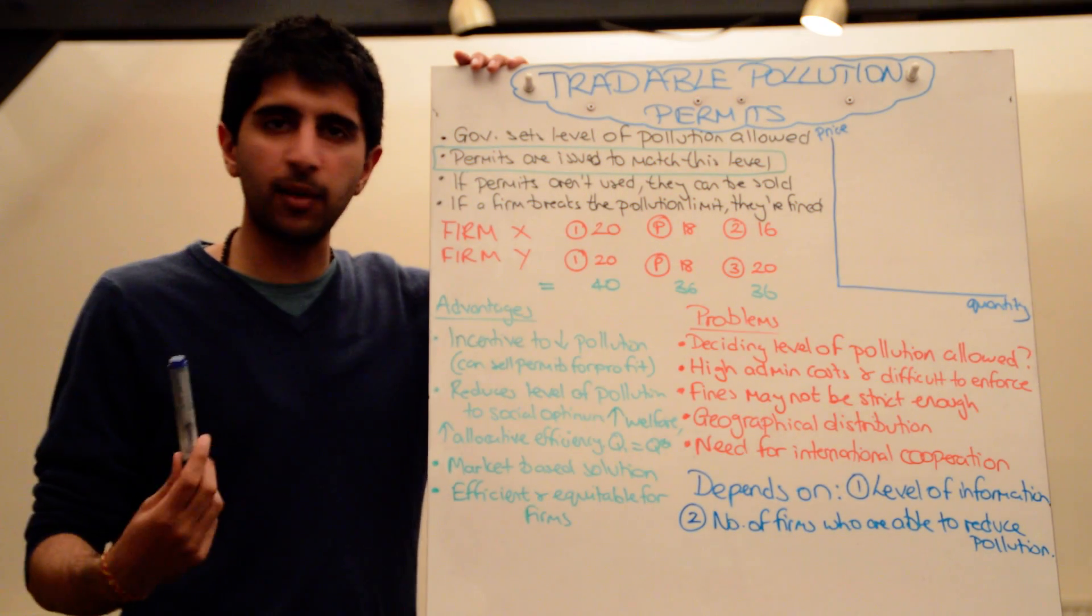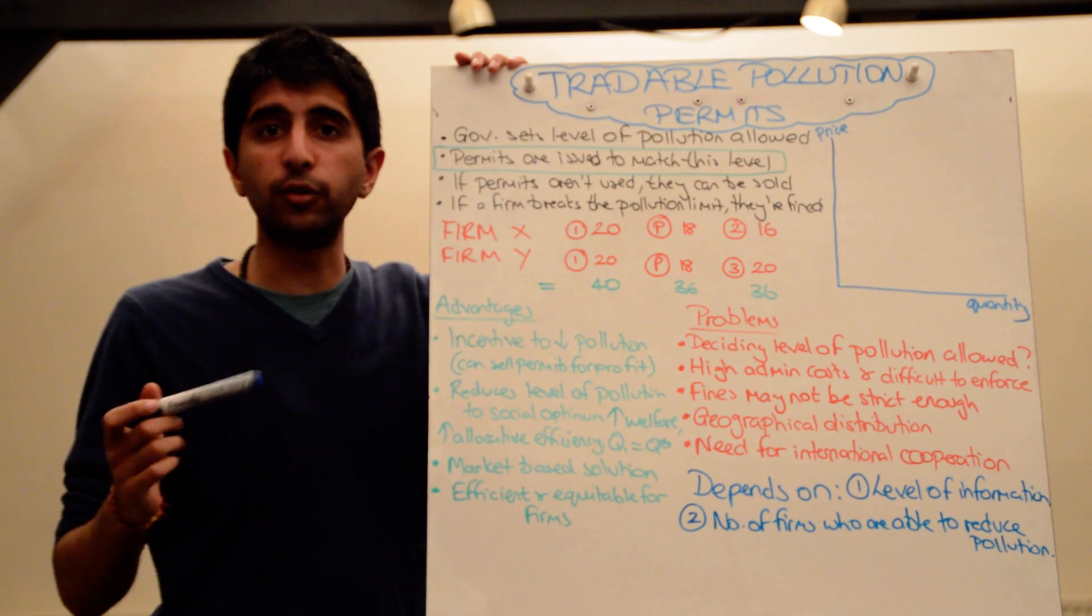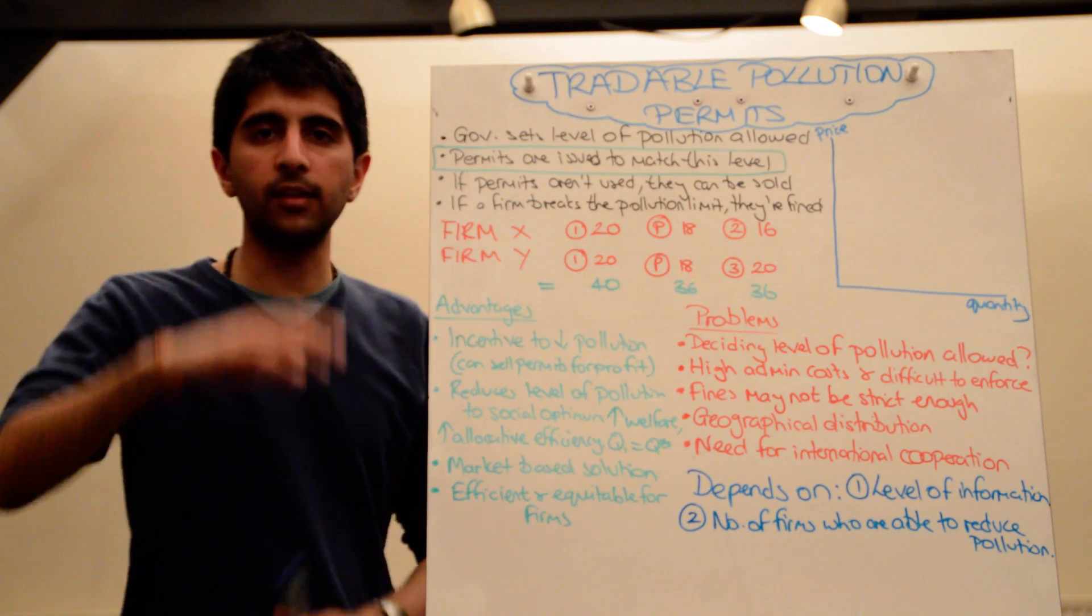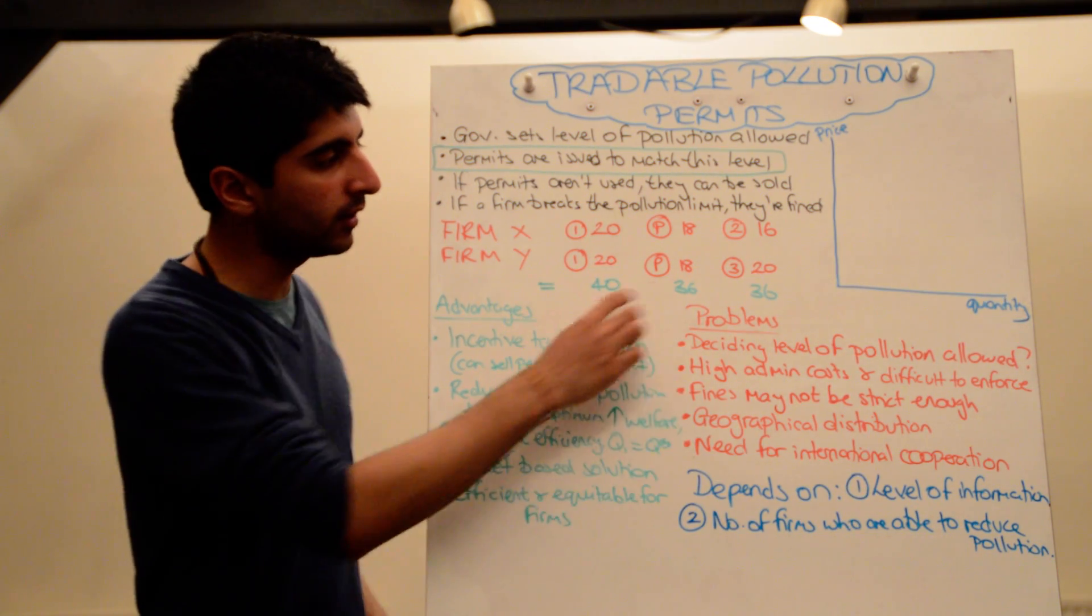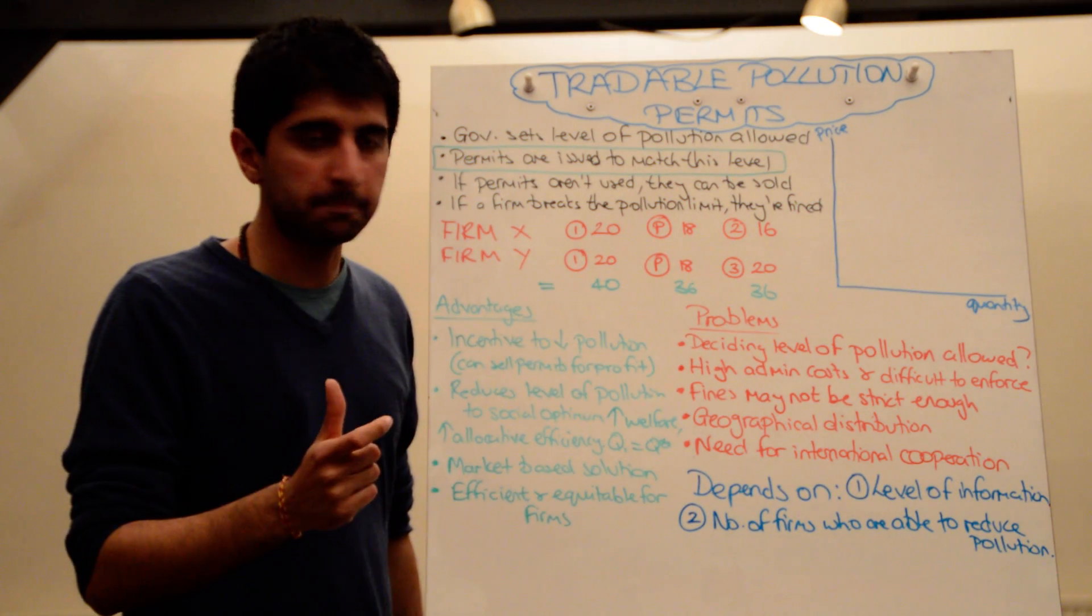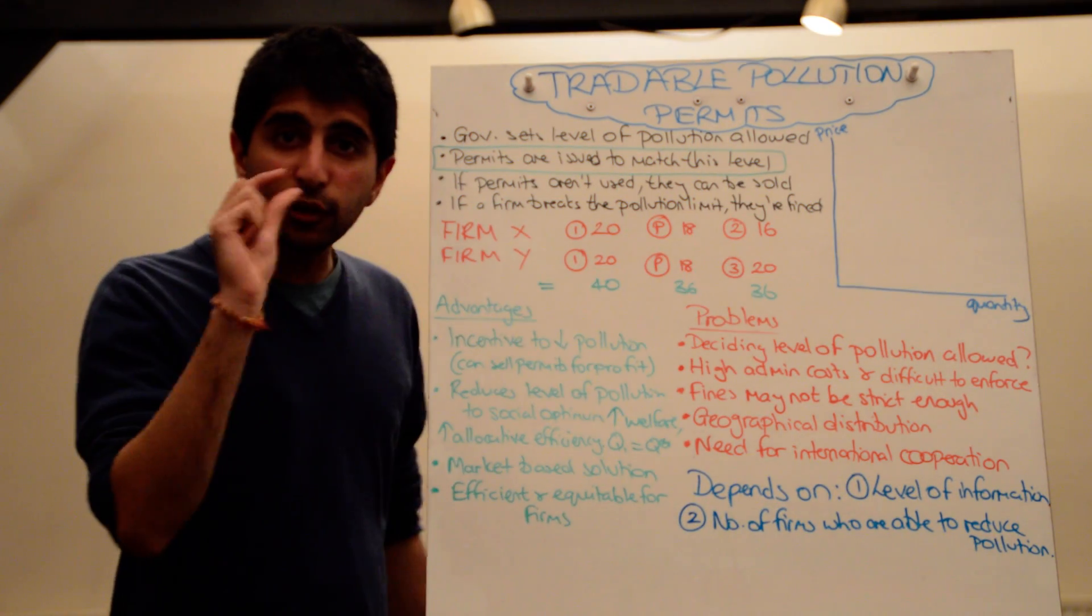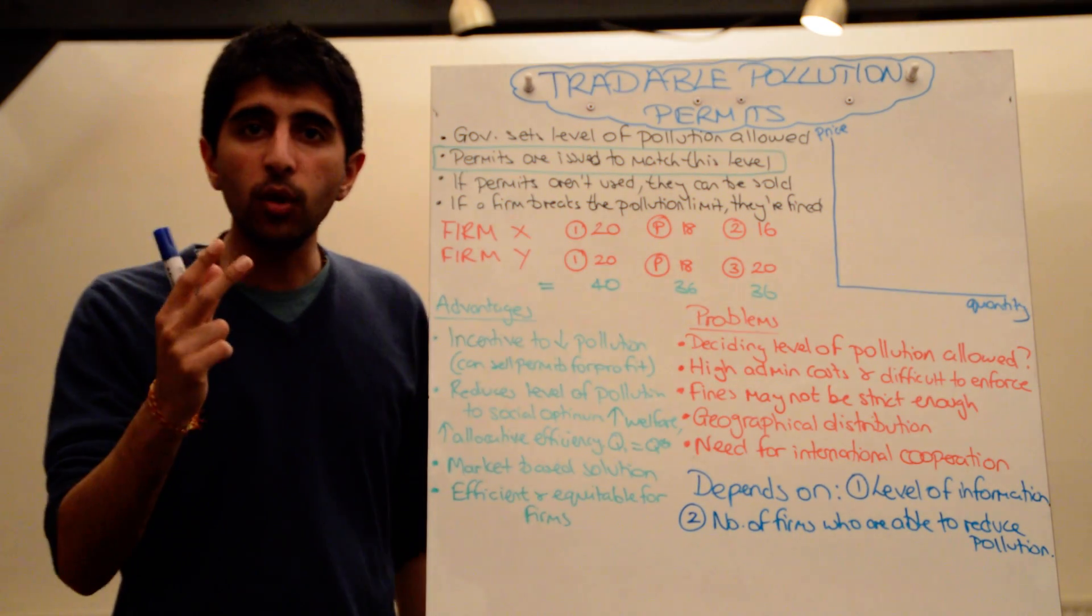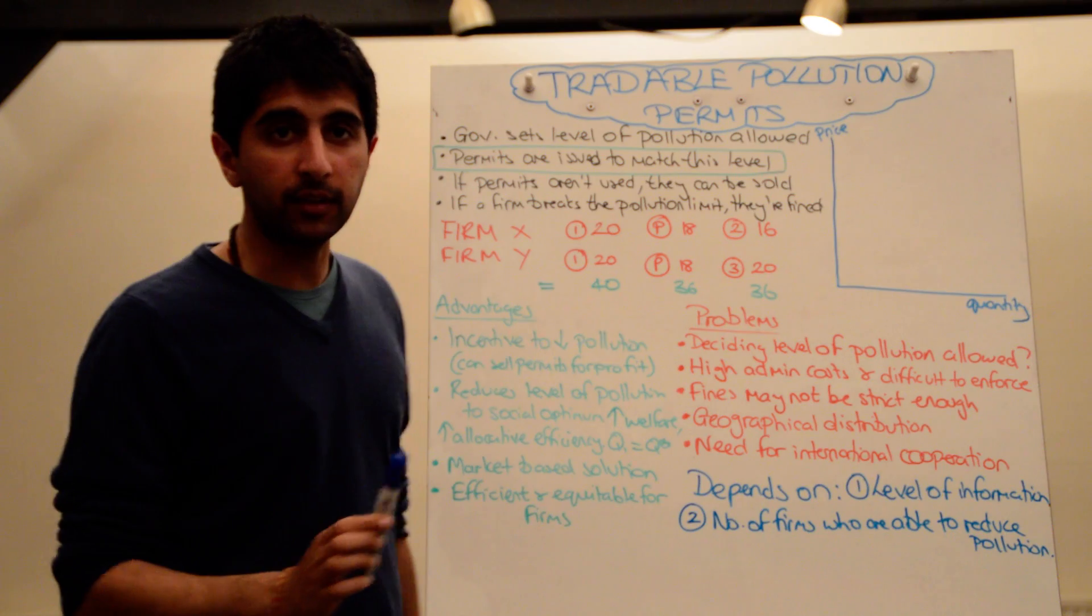But let's say firm Y have decided hang on a minute. It might be too difficult for us as firm Y to reduce our level of pollution. It's too expensive for us to buy new machinery or to invest in ways of reducing pollution. So they've decided to continue polluting at 20.